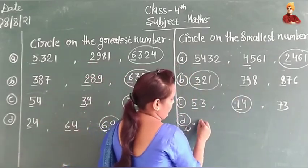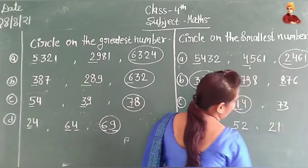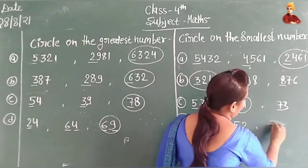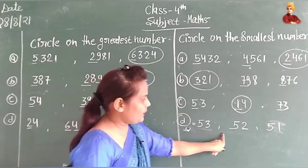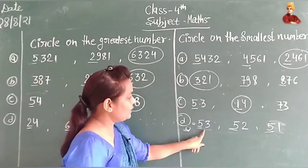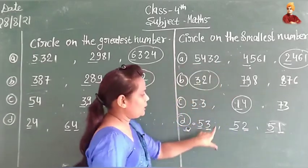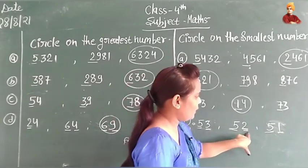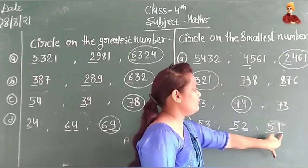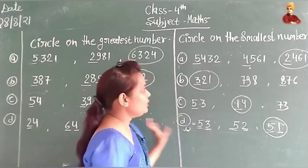If you are asked about 53, 52, and 51 — or something like 53, 52, and 50 — the tens digits are the same for all three numbers. When the tens digits are the same, we look at the ones digits: 3, 2, and 1. The smallest ones digit is 1, so 51 is the smallest number. This is how we find the smallest number.